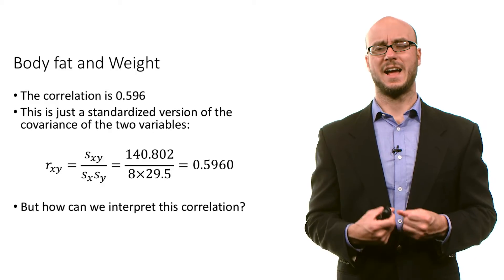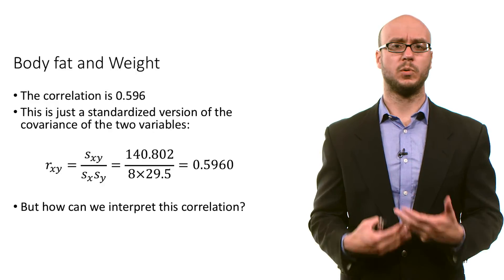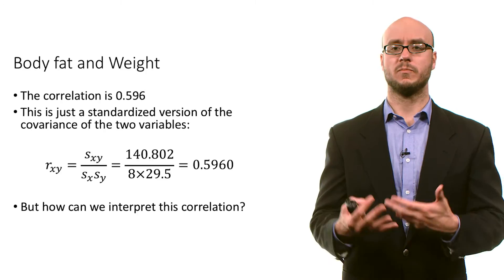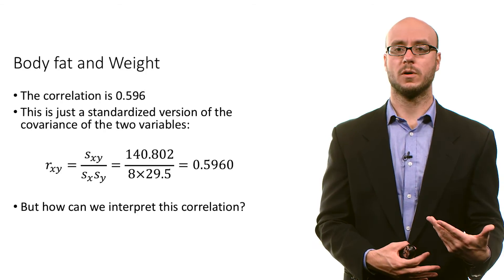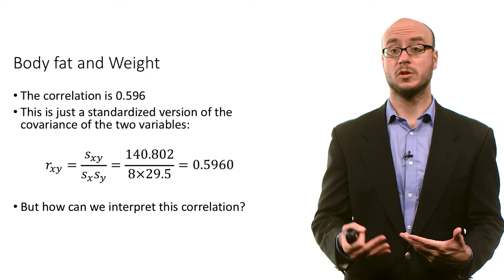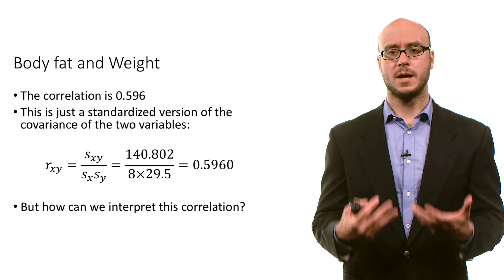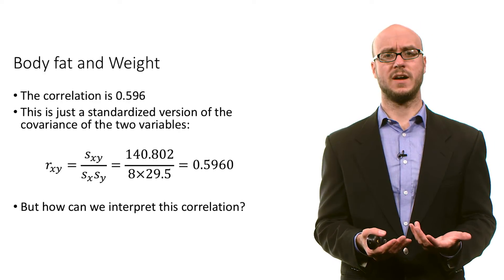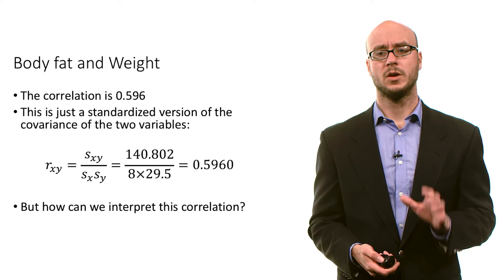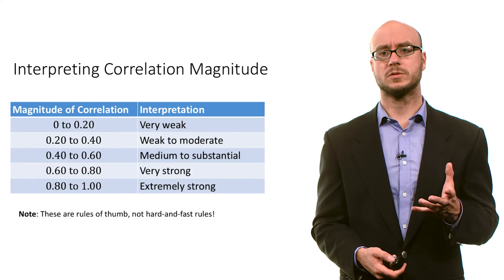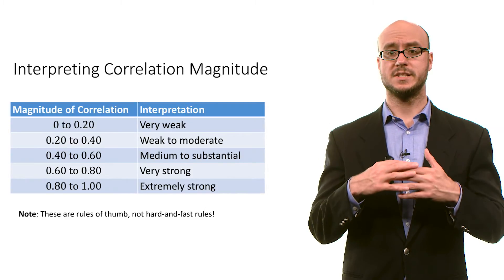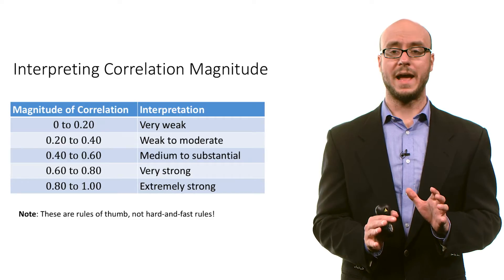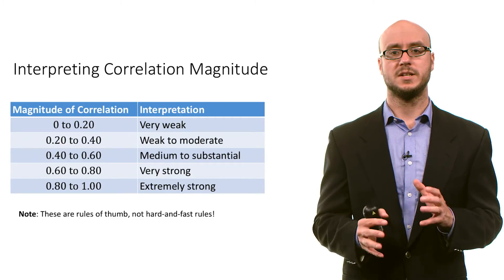The question is, how can we interpret this? We know that 0.596 has a greater magnitude than 0.4 and a smaller magnitude than 0.9, but substantively, what does a correlation coefficient of 0.596 mean? Well, there are a few rules of thumb for interpreting correlation magnitude, and it will vary from discipline to discipline.